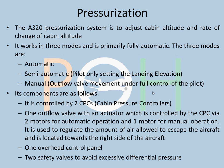The components are as follows. It is controlled by two CPCs — cabin pressure controllers. There is one outflow valve with an actuator, kind of like a flap on the right side of the aircraft. It is controlled by the CPC via two motors for automatic operation and one motor for manual operation. It regulates the amount of air allowed to escape the aircraft. There is also one overhead control panel and two safety valves to avoid excessive differential pressure — if the aircraft is pressurized over an excessive value, the safety valves will open and pressure will be released so you don't stress the physical structure of the aircraft.